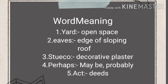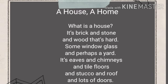Now let's look at some word meanings. You can underline them in your book or note them in your notebooks. First, 'yard' means the outer open part of the house, or open space. Second, 'eaves' means the edge of a sloping roof. Third, 'stucco' means decorative plaster covering of cement and sand. Fourth, 'perhaps' means maybe or probably. Next, 'acts' means deeds.